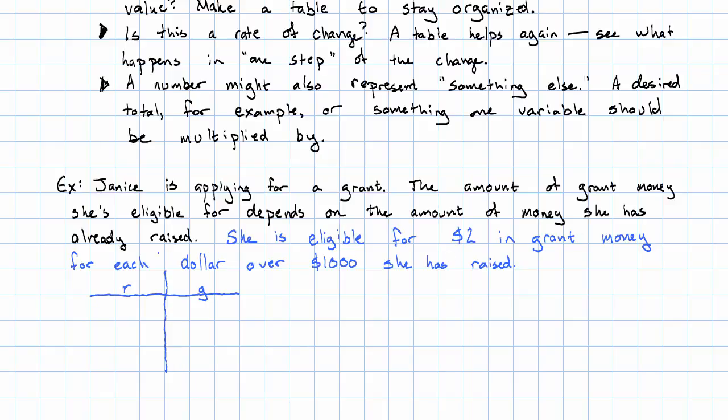So she's only eligible for grant money for dollars over the first thousand that she's raised. So that means if she raises $1,000, she's eligible for no money. Then, for each $1 after that she raises, she's eligible for $2 in grant money. So if she's raised $1,001, she's eligible for $2 in grant money. And so on. Notice, we identified that $1,000 as a value of R. We said, what value of G goes with that value of R? That is, if she's raised exactly $1,000, how much grant money is she eligible for? Then we used that rate of change to come up with one additional point.